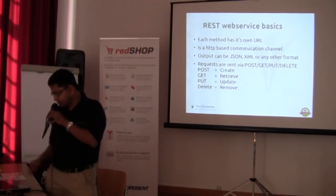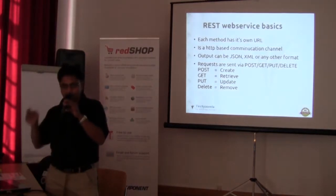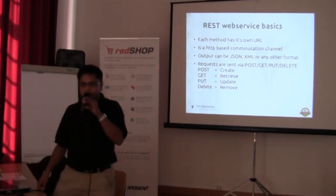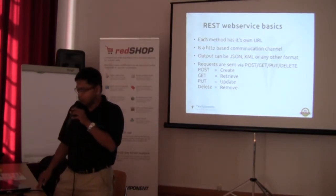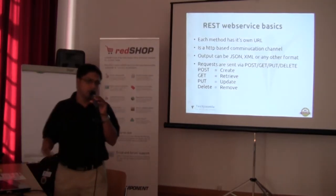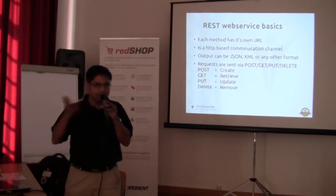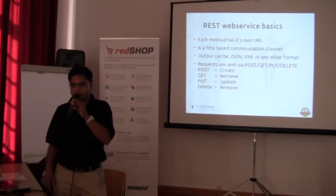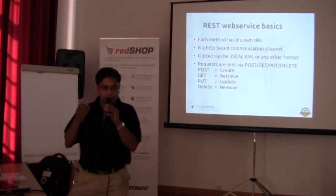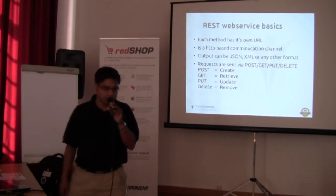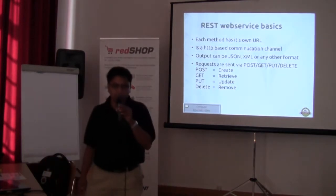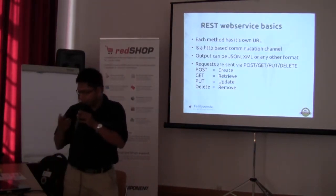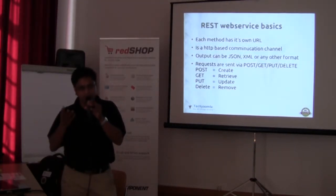Some basic thoughts on REST: each method has its own URL, so there is user/create, user/delete, and things like that. It's an HTTP-based communication channel, so all data exchange happens through HTTP. Output can be a variety of formats — you can have JSON, XML, or plain text depending on your needs. GET and POST are very common and we use those in Joomla, and then PUT and DELETE are additional methods. PUT is typically for updating, DELETE is for deleting, GET is for reading or retrieving, and POST is for saving a record.